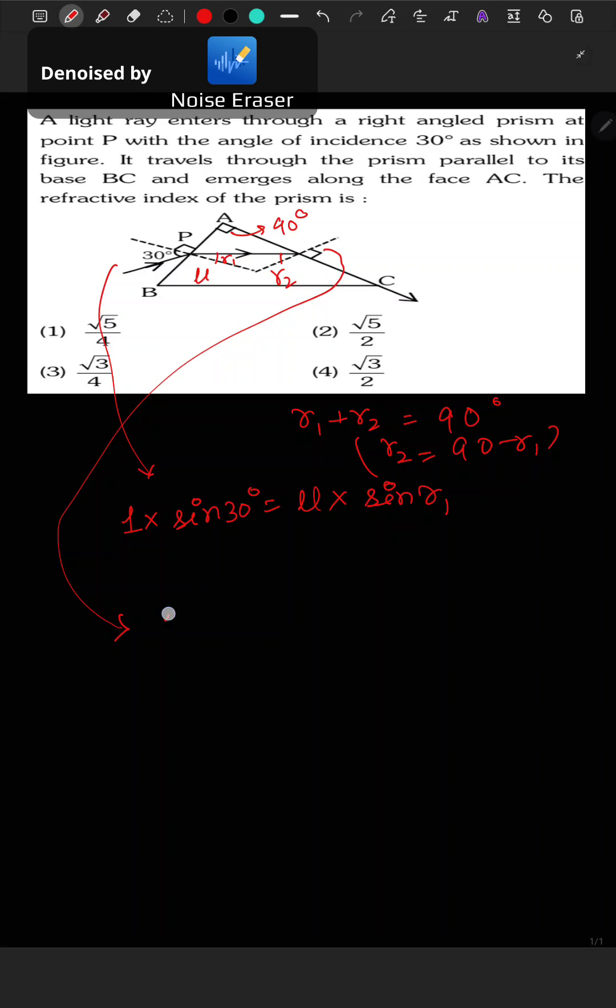mu × sin r2 equals 1 × sin 90°, which equals 1. Since r2 can be written as 90 minus r1, we have mu × sin(90° - r1) = 1, which simplifies to mu × cos r1 = 1.